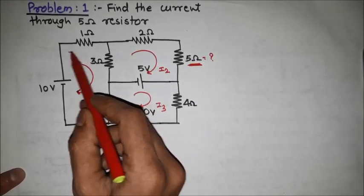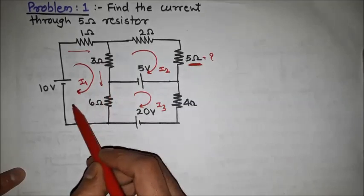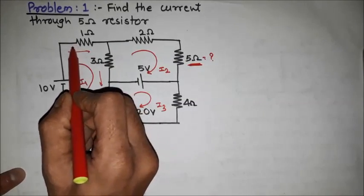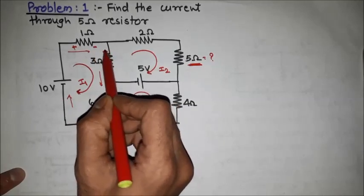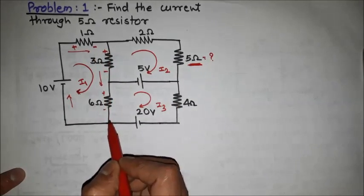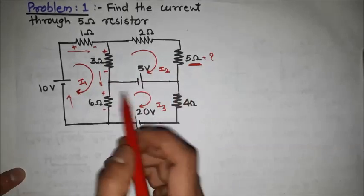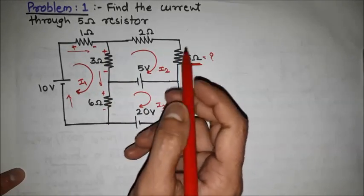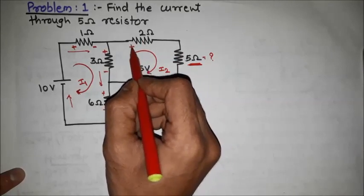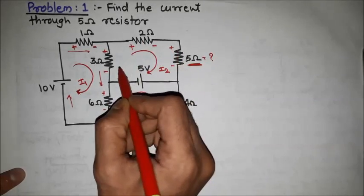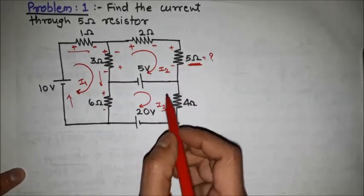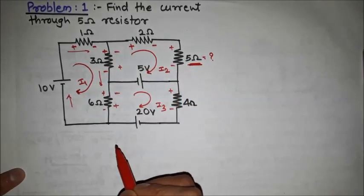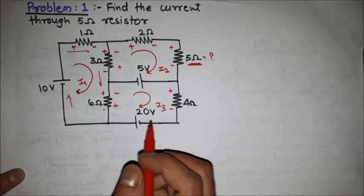The second step is to assign polarities to the voltages. Considering the clockwise direction, current flows accordingly through each element. The sign conventions are: plus minus, plus minus, plus minus, plus minus — the starting terminal is plus and the end terminal is minus. In the second mesh and third loop the sign conventions follow the same pattern: plus minus, plus minus.